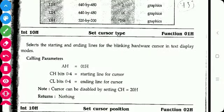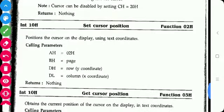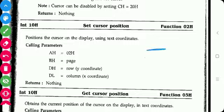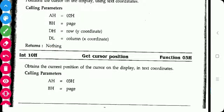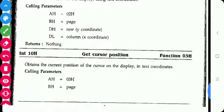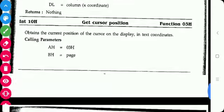Function 01h of INT 10h is used to set the cursor type. Function 02h of INT 10h is used to set the cursor position — placing the cursor where we want it. For this, AH contains the function number, BH contains the page number, and DH and DL contain the X and Y coordinates of the desired cursor position. The reverse operation, get cursor position using Function 03h, retrieves the X and Y coordinates of the current cursor position.